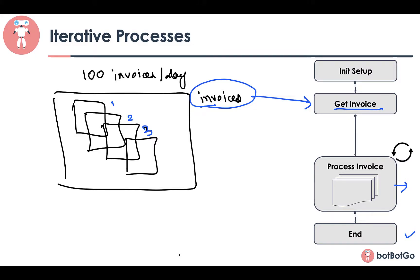In order to solve this issue of interdependencies between invoices, we need to move to the next process type, which is called the Transactional Process.